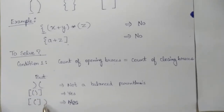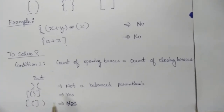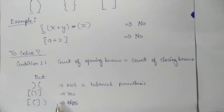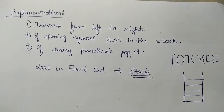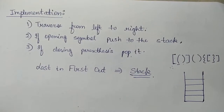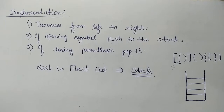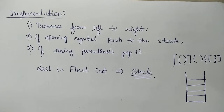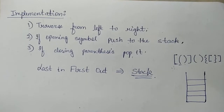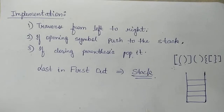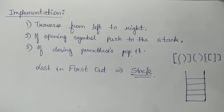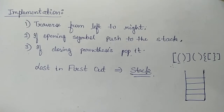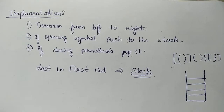The other two examples satisfy both Condition 1 and Condition 2, hence they are balanced parenthesis expressions. So that was all about the concept of balanced parenthesis. Now let's move towards the implementation. But before that, let's briefly look at what a stack is. A stack is a linear data structure which follows Last In First Out.